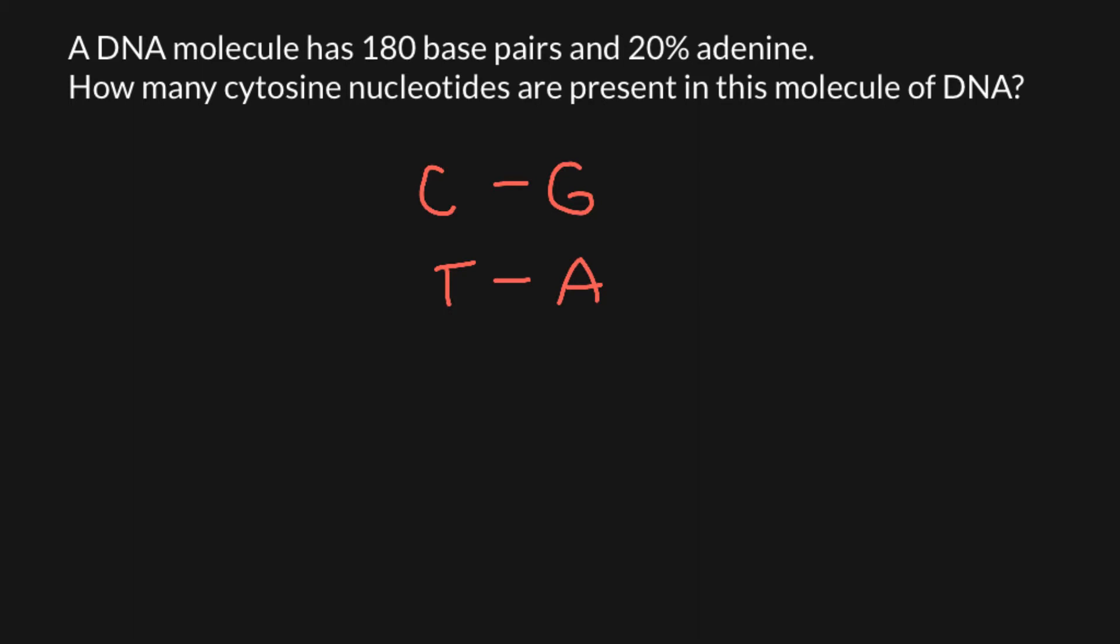If we are told that the number of adenine represented in this double-stranded DNA equals 20%, this gives us information that the number of thymines also would equal 20%. If these two bases would make together 40%, that means that the rest 60% would make cytosine and guanine.